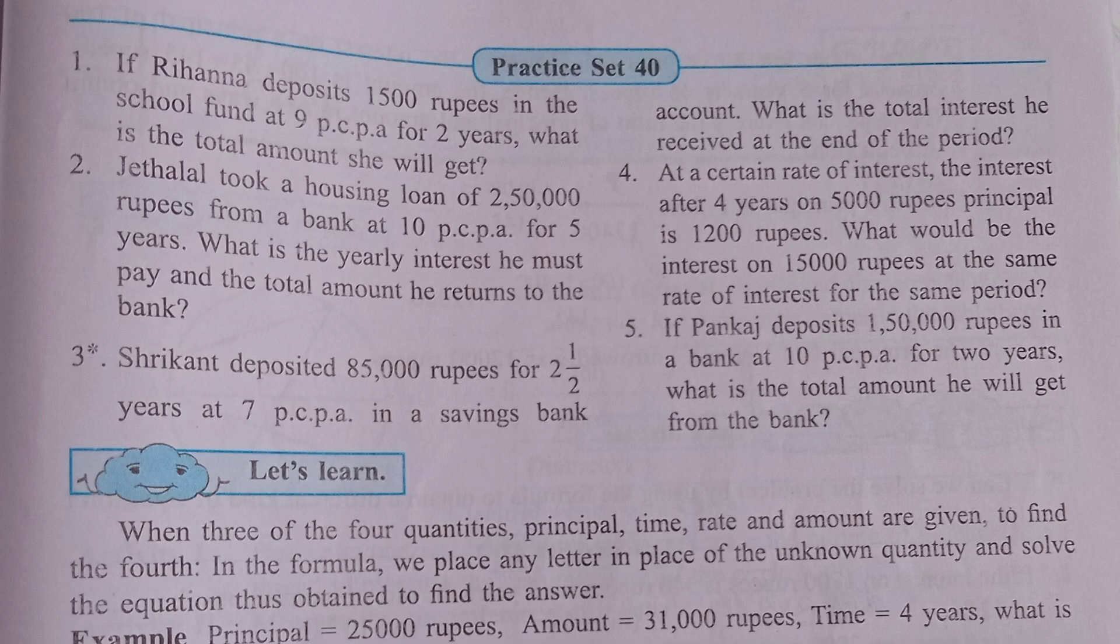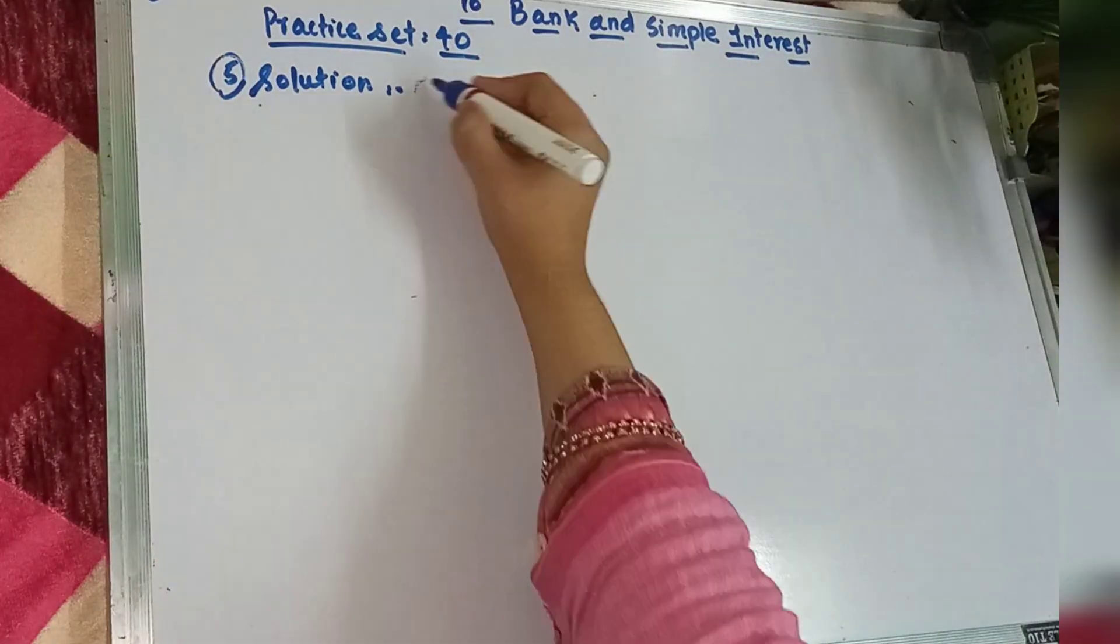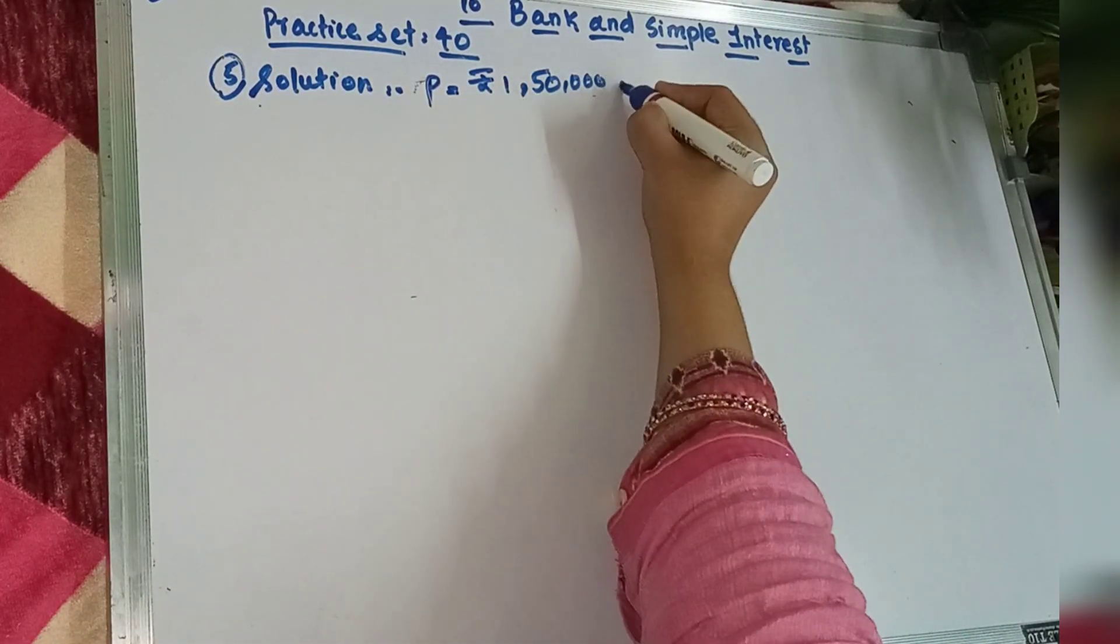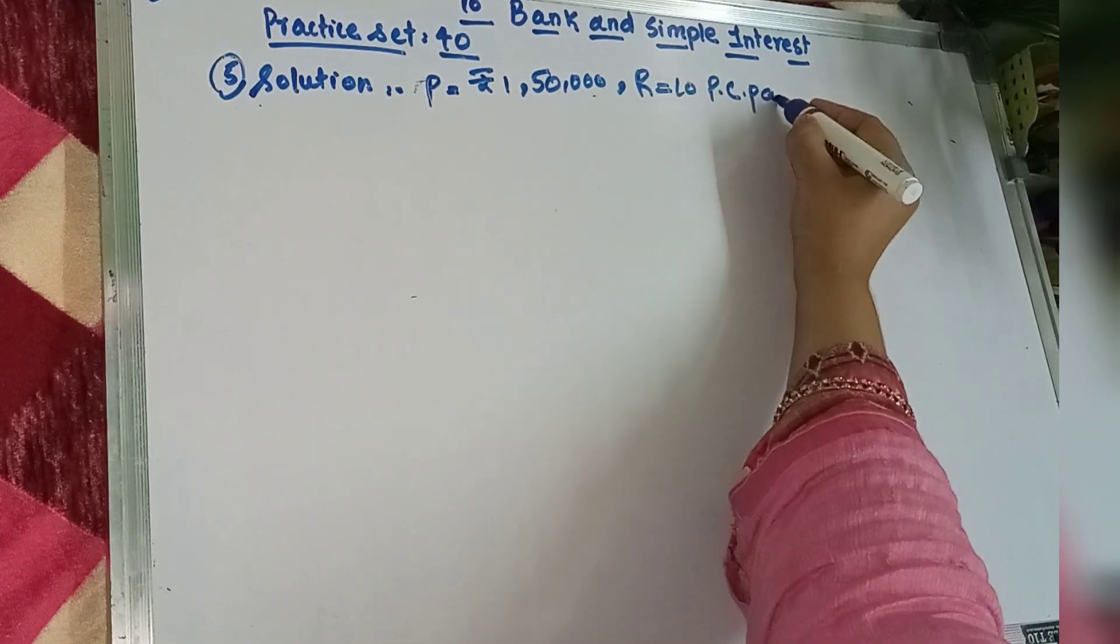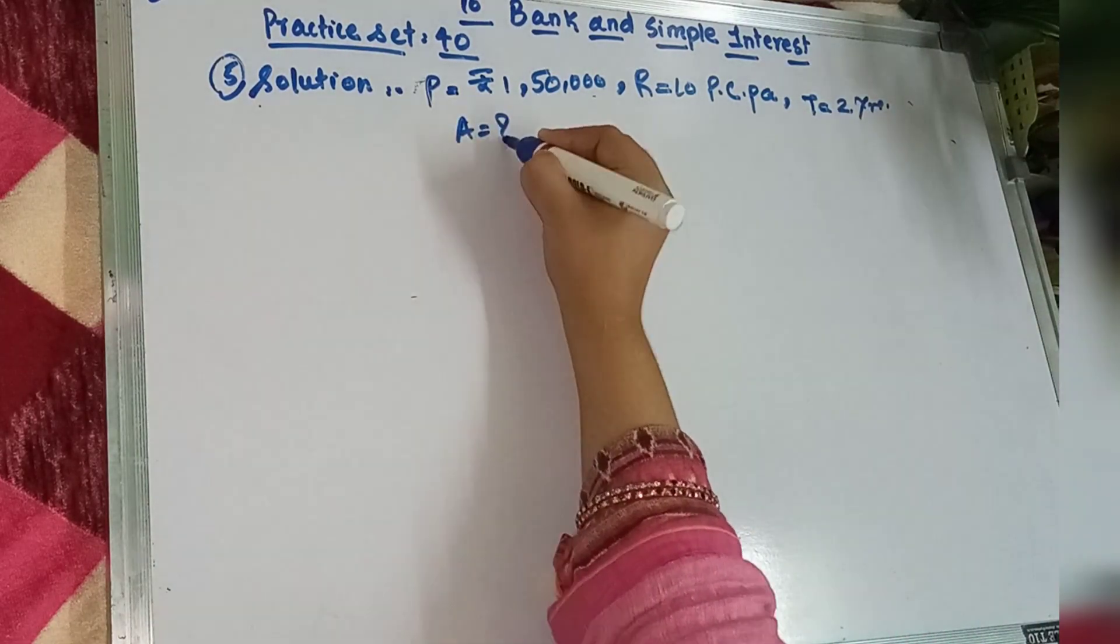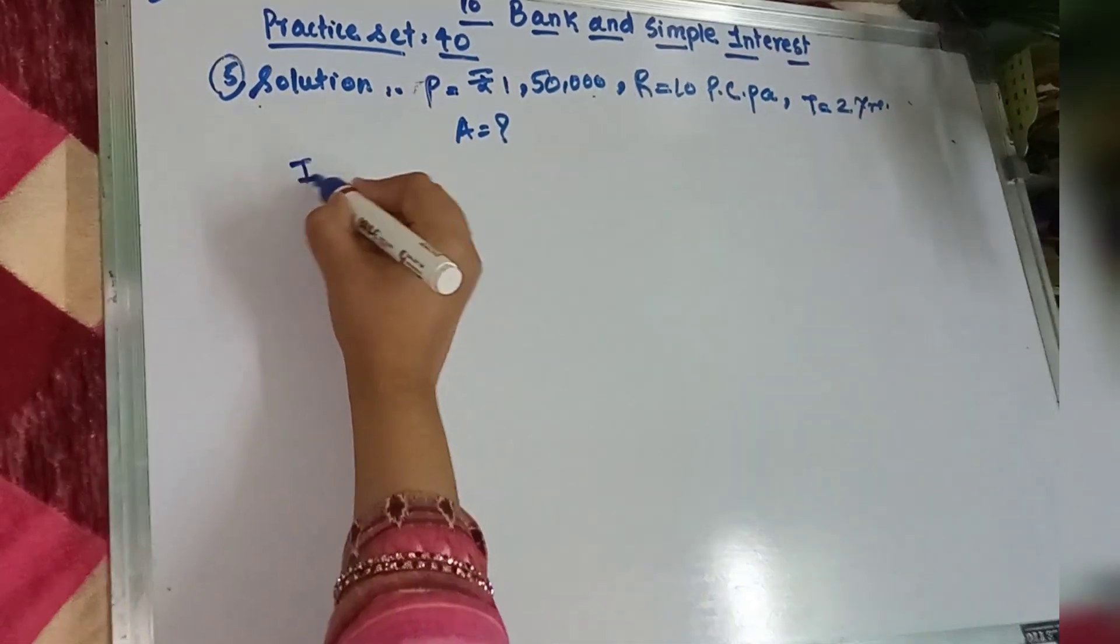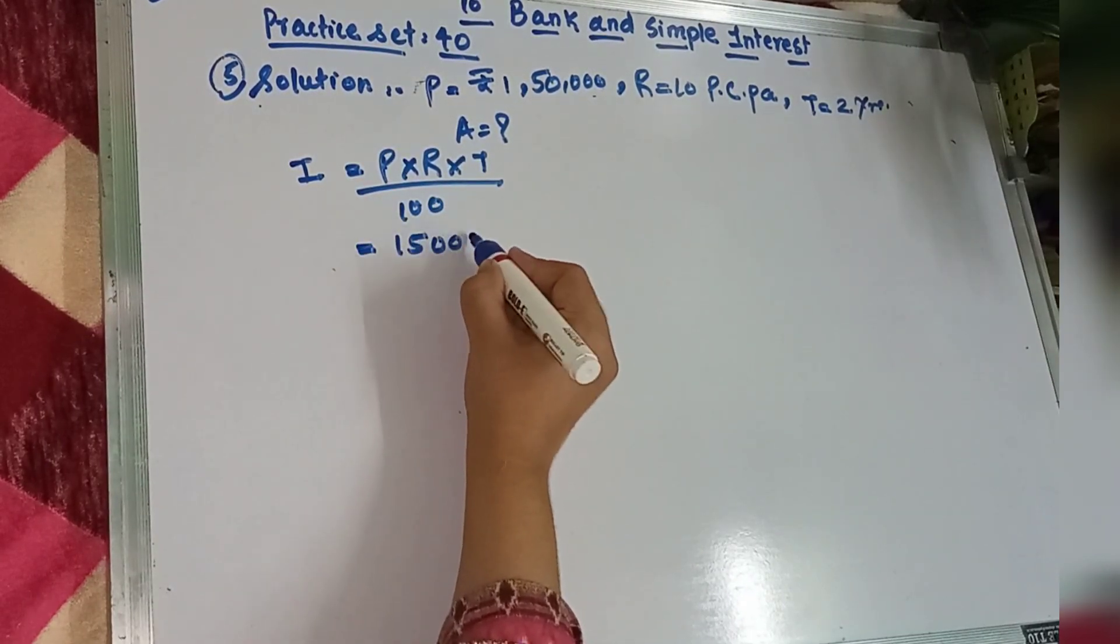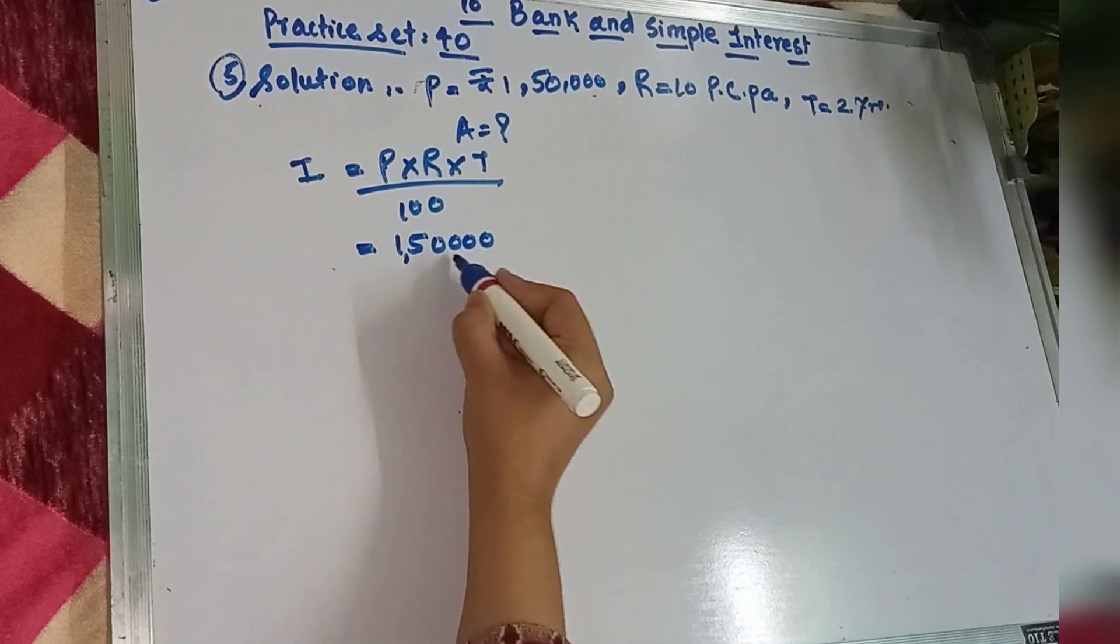Now see the last question. Question number 5, Pankaj deposited Rs. 15,000 in a bank at 10 PCPA for 2 years, what total amount will he get from the bank at the end of the period? Humko yahan par principal mein diya hai Rs. 50,000, rate hai 10 PCPA, and time diya humko 2 years. Humko amount find out karna hai. Then wahi formula lagega, interest is equal to PRT upon 100.